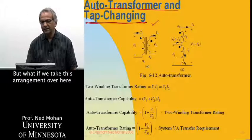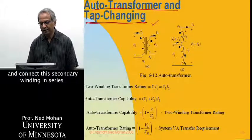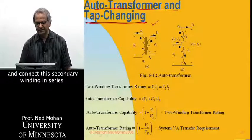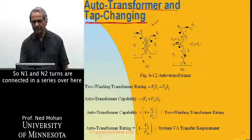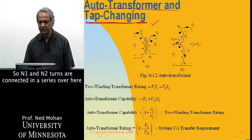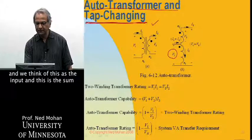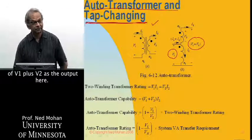But what if we take this arrangement over here and connect the secondary winding in series with the primary winding? So N1 and N2 turns are connected in series, and we think of this as the input, and this, the sum of V1 plus V2, as the output here.